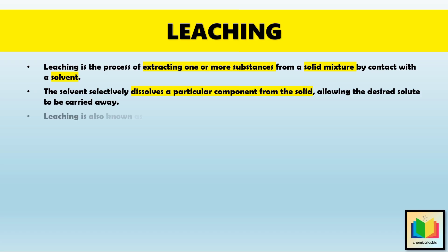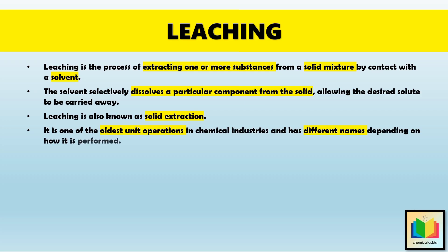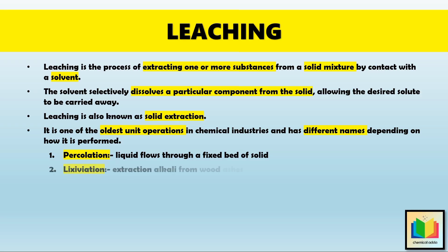Leaching is also known as solid extraction, because in this process a liquid solvent is used to remove a specific component from a solid mixture. It is one of the oldest unit operations in chemical industries, and has different names depending on how it is performed. Like percolation — originally leaching referred to percolation, where the liquid flows through a fixed bed of solid, but the term is now used for all methods. Another name for leaching is lixiviation, which is another term for leaching, though it was first used for extracting alkali from wood ashes.